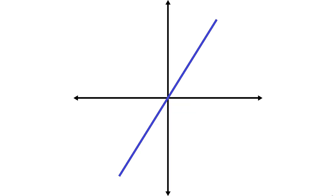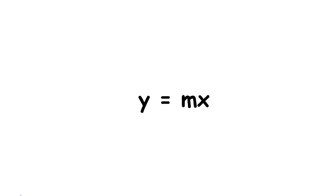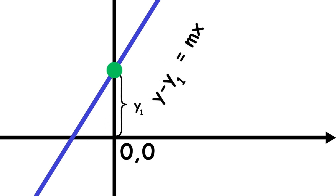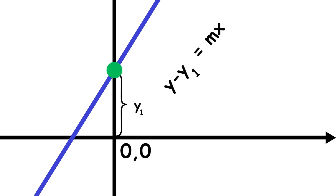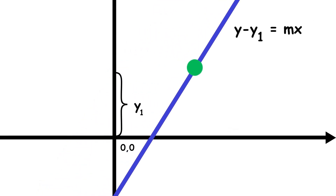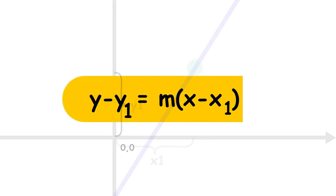It is also possible to write an equation for a linear graph given its slope m and a point that it passes through, (x1, y1). We begin with the equation y equals mx, which gives us a line of slope m passing through the origin. We can shift it vertically by y1 by replacing y with y minus y1, giving y minus y1 equals mx. Then we can shift it horizontally by x1 by replacing x with x minus x1, giving y minus y1 equals m times the quantity x minus x1.